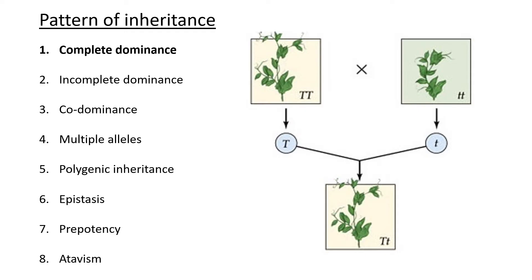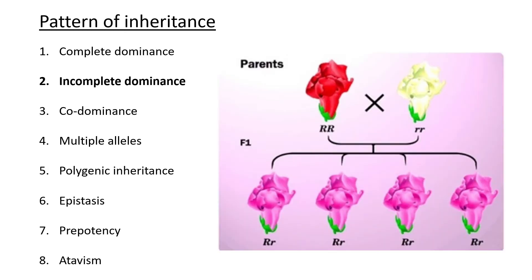There are other types of patterns of inheritance. The second one is called incomplete dominance. In this case you get a new phenotype. This example is about color — we have a red parent and a white parent, and they produce pink children. All of their children will be pink. Usually when we do this example both alleles will be equally dominant.